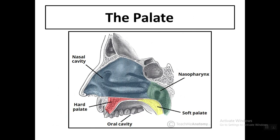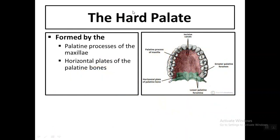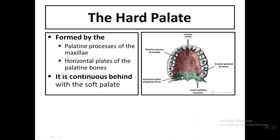Now we come to the palate. The palate forms the roof of the oral cavity proper and the floor of the nasal cavity. It is formed anteriorly by the hard palate and posteriorly by the soft palate. The hard palate is formed anteriorly by the palatine process of the maxilla and posteriorly by the horizontal plates of the palatine bone. It is continuous behind with the soft palate.